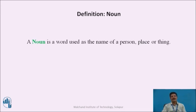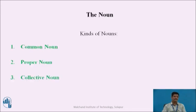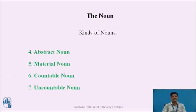After having understood what a noun is, we will now proceed to the various kinds of nouns. First, we have common noun, then proper noun, collective noun, abstract noun, material noun, countable noun, and uncountable noun.